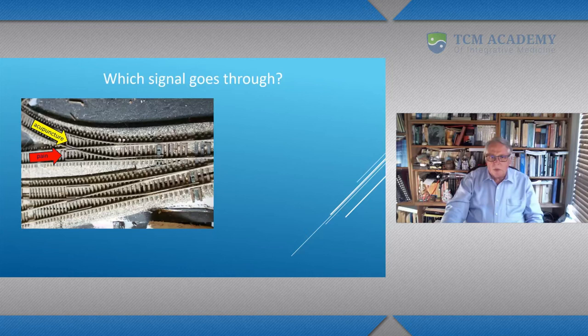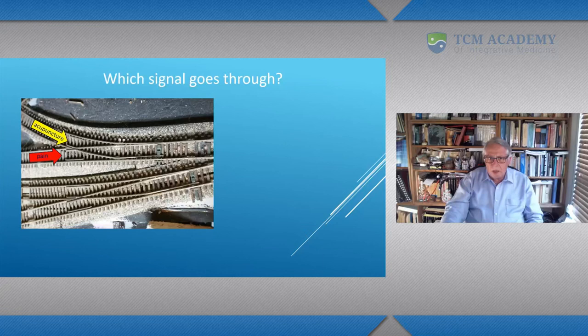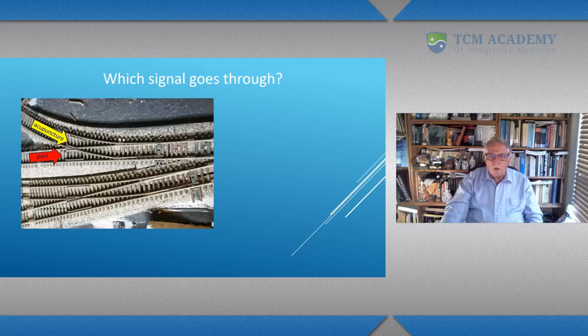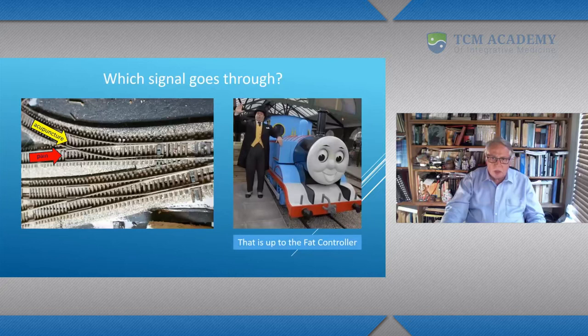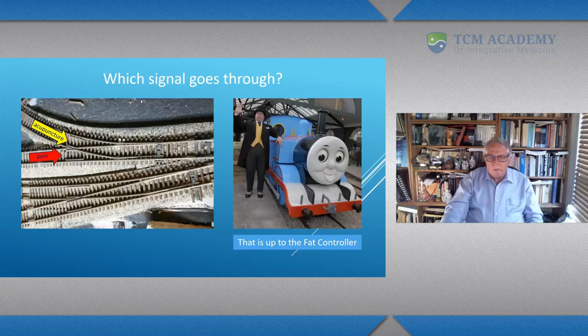On C fibers, it's 50 to 200 centimeters per second. The sort of sensation that's transmitted on A-delta is what we call classic pain—fast, sharp pain that makes you want to pull away. The sensations on C fibers are described as slow, dull, poorly localized, chronic, and burning.